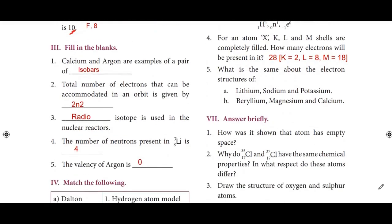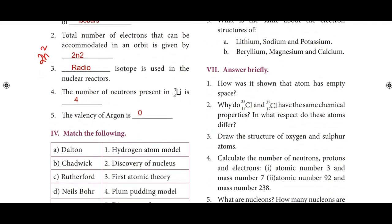Section 3: Fill in the blanks. First: Calcium and argon are a pair of isobars. Second: Total number of electrons that can be accommodated in an orbit is given by 2N². Third: Radioisotope is used in nuclear reactors. Fourth: The number of neutrons present in lithium is 4. Fifth: The valency of argon is 0, as it is an inert gas.